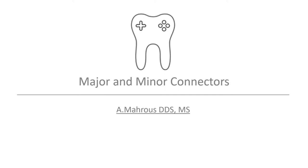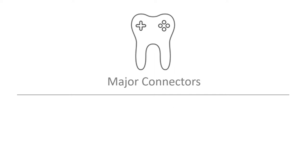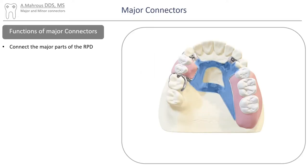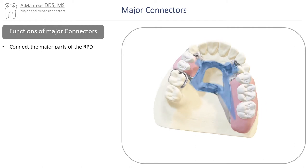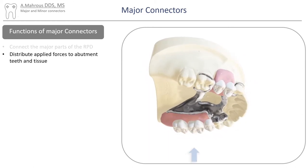Hello and welcome to another RPD video. Today we'll be discussing major and minor connectors. Let's begin with major connectors. The most basic function of the major connector is to connect the different parts of the RPD together. The major connector also distributes the applied forces to the abutment teeth and the tissues.